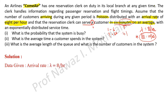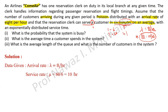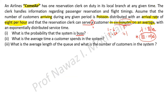So in the solution: lambda is 8 per hour, and the service rate mu I calculated is 10 per hour. Before solving, we must understand what is required to be found. The first question is: what is the probability that the system is busy? That means we need to find the utilization factor, rho. If the system is idle, it will be 1 minus the busy probability. So the traffic intensity or utilization factor is rho, and its formula is lambda by mu.